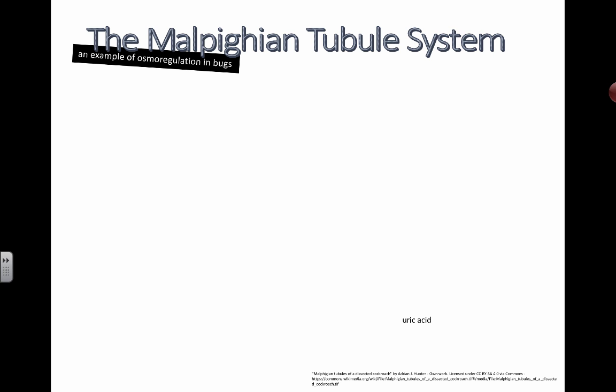So the Malpighian tubule system is an example of osmoregulation in bugs. To make this more meaningful to you, you should try to understand already how osmoregulation happens in humans.